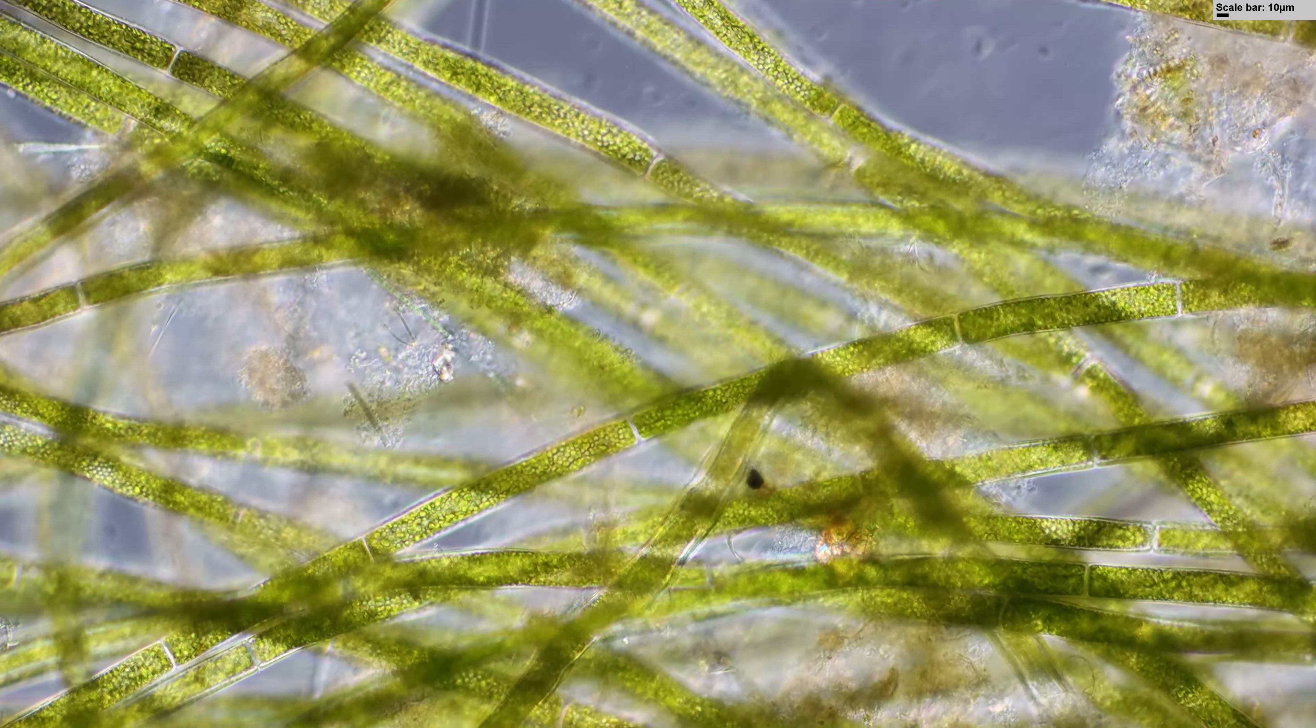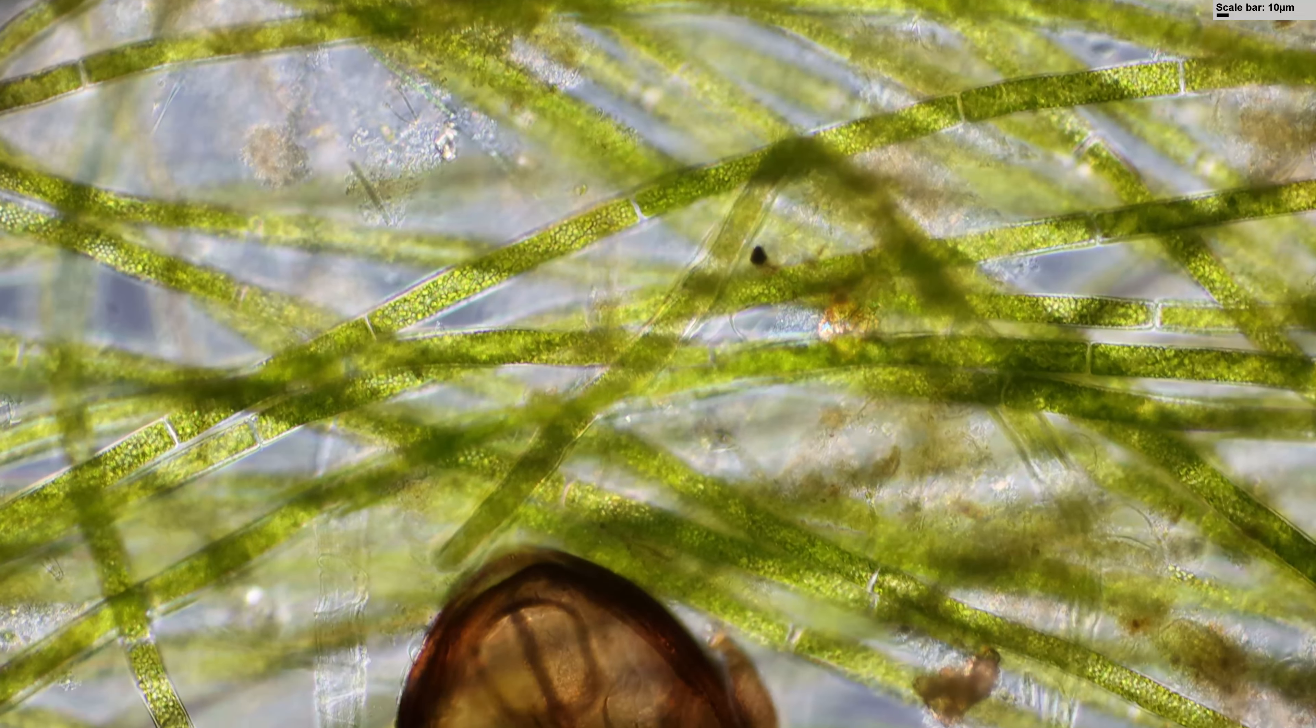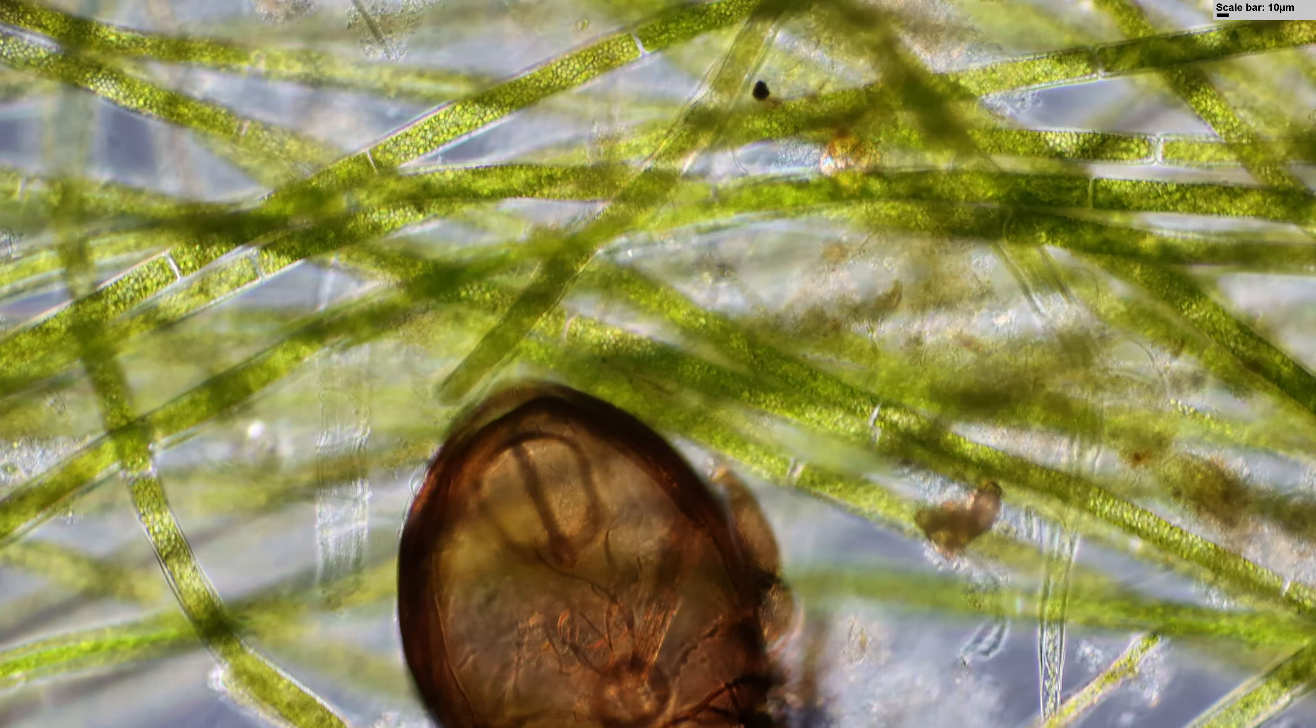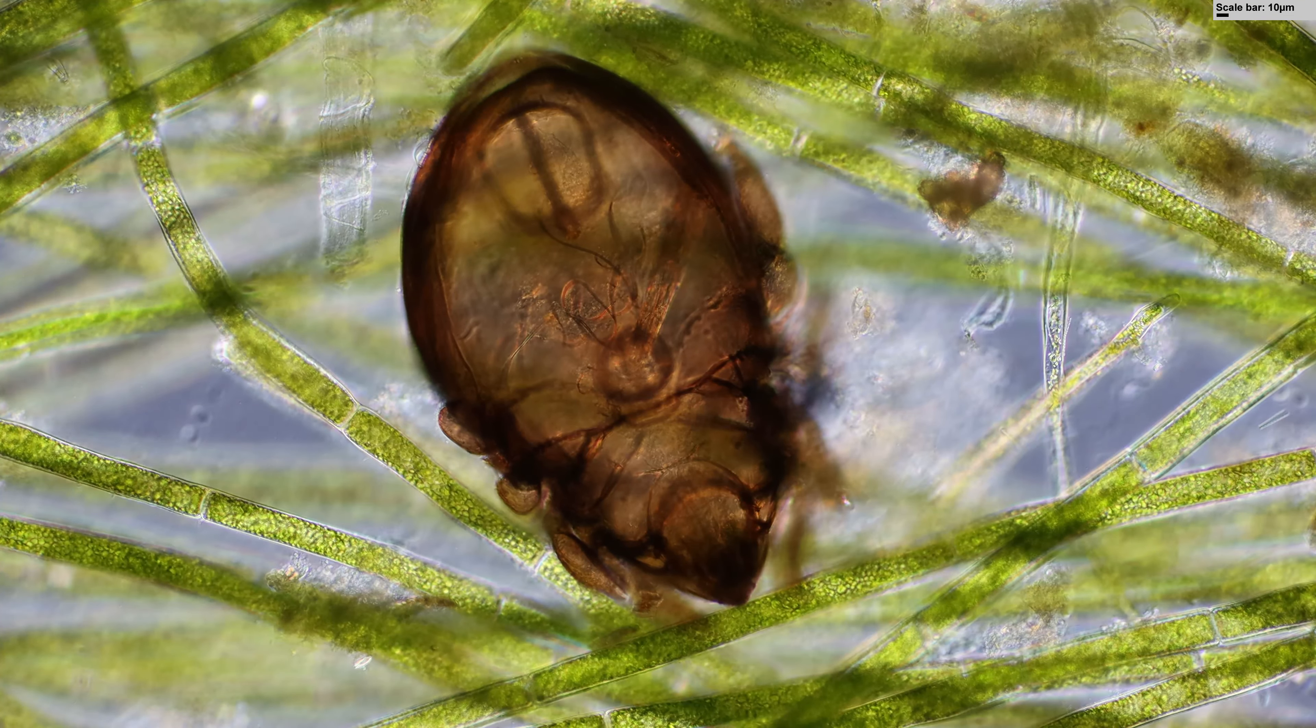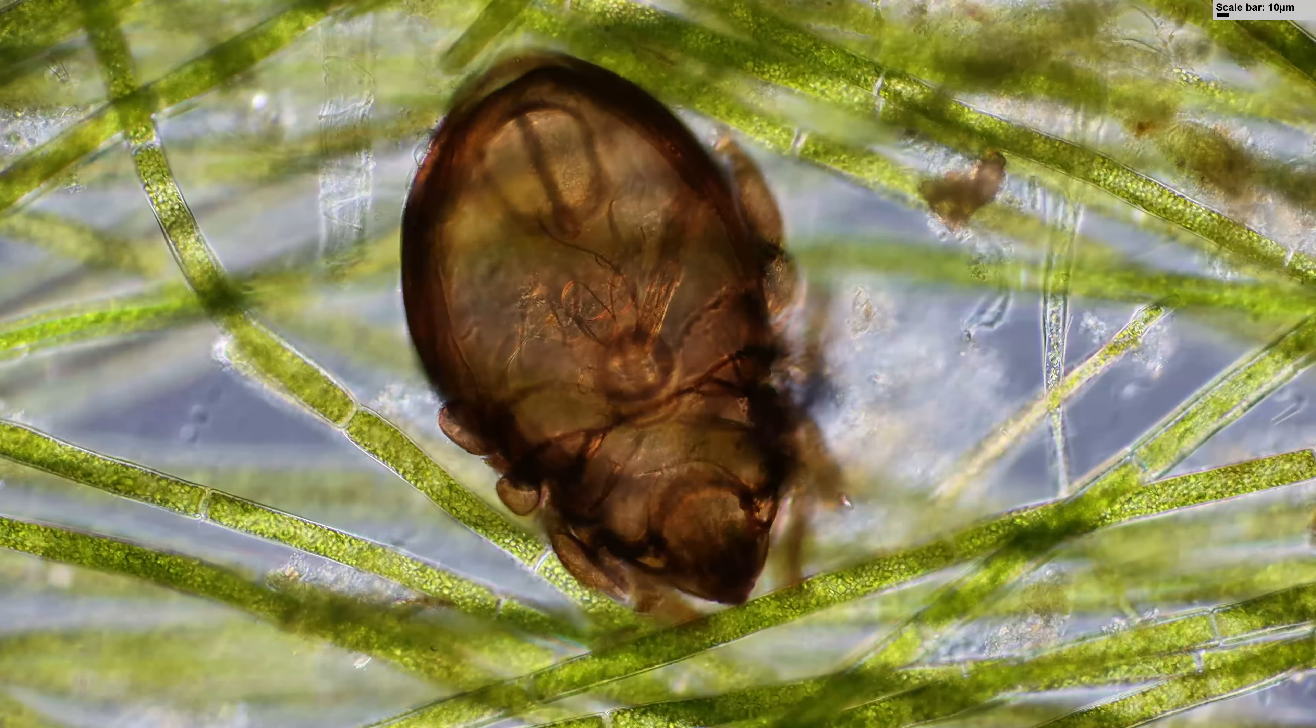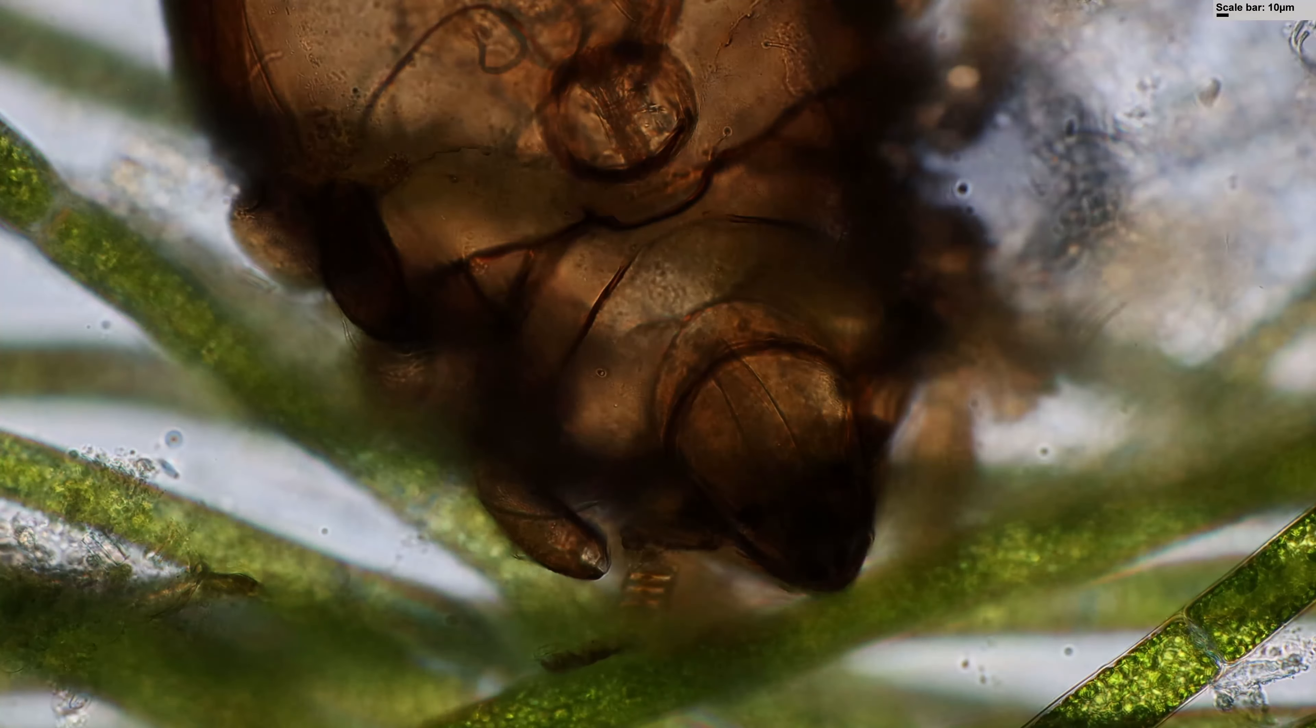When I put those algae under the microscope, I did not only find a whole bunch of ciliates and rotifers, but also, surprise, a mite—a microscopic mite. This kind of shows that the algae is also the habitat, the place where many other animals, microscopic animals, are able to live.